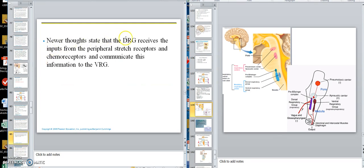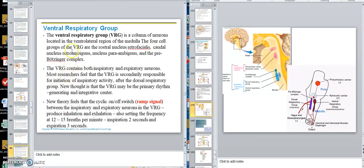Let's go further. Newer thoughts state that the DRG receives signals from the peripheral receptors, and communicates to the VRG. So new thought is that the VRG may be the main thing, the VRG. So there's questions on that. But we know it's the DRG or the VRG, and most commonly, it seems right now to be the VRG. So that's the ventral respiratory group. Now, what the ventral respiratory group is this: if that is the one that does inspiration, then it will spontaneously fire a ramp signal.